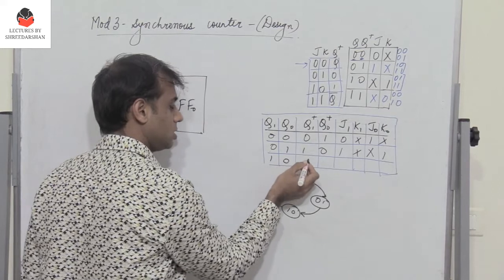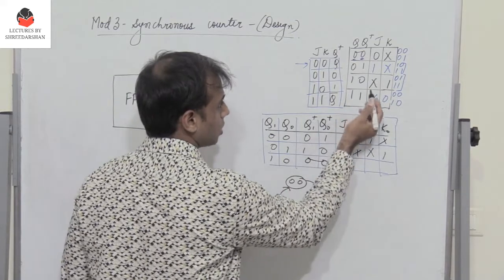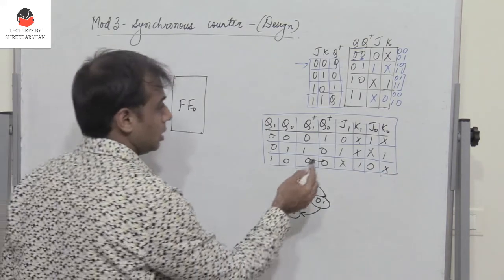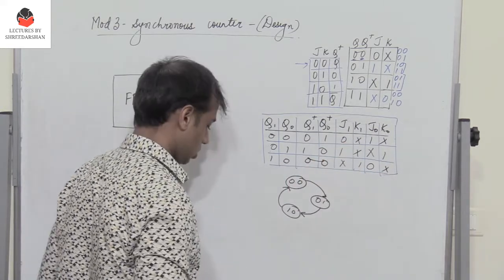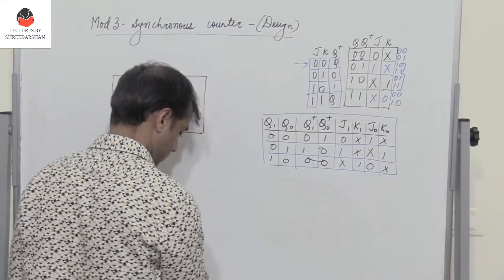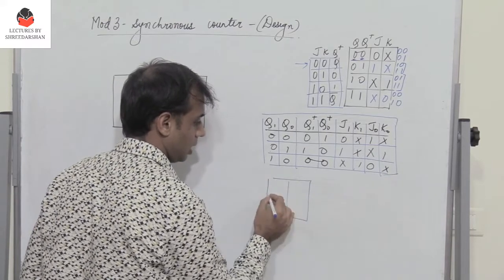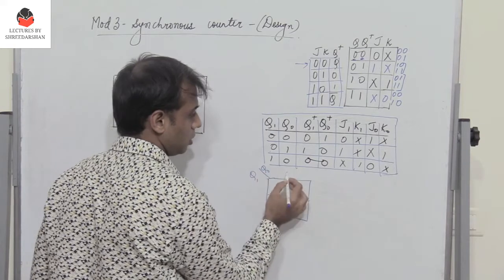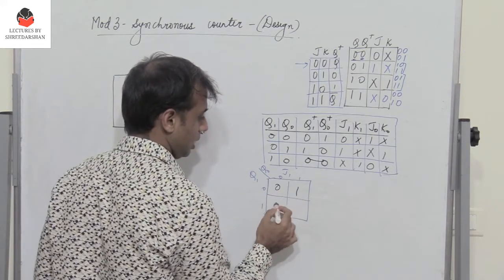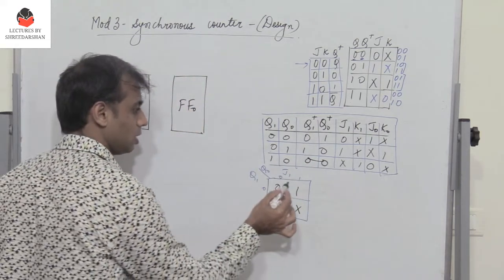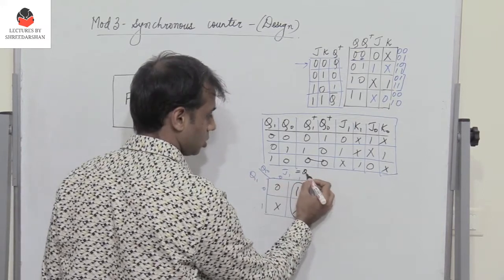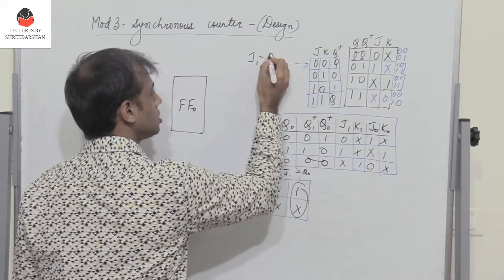When the current state is 10 and the next state must be 00: for Q1 it is 1 to 0, giving X 1; for Q0 it is 0 to 0, giving 0 X. Now I need to simplify the expressions for J1, K1, J0, K0 using a two-variable K-map. For J1, plotting the values gives 0, 1, X — combining these, Q1 cancels and J1 equals Q0.